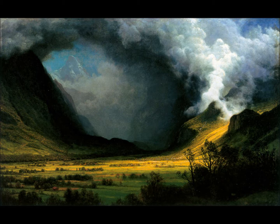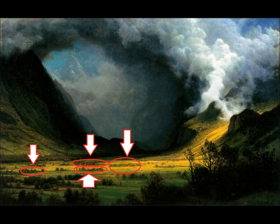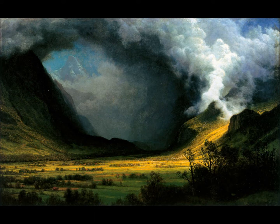Some may see this as an Age of Reason painting, using the example of human dominance. They may argue that even though the small space of the valley is the only possible place they can settle, they have made the most of it — they have cut down the trees and left them in bundles across the area. This may be true, but not all of the trees have been cut down; there are many still all over the painting. One can also compare the size of the house to the size of the storm. It is very easy to see that compared to the storm, the house may as well be for an ant.